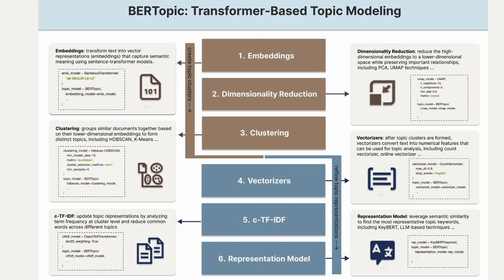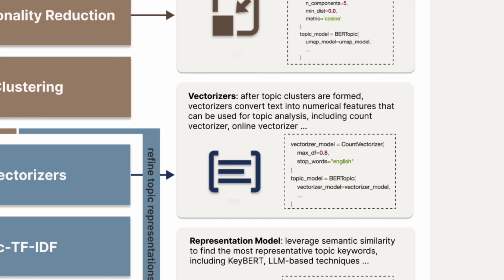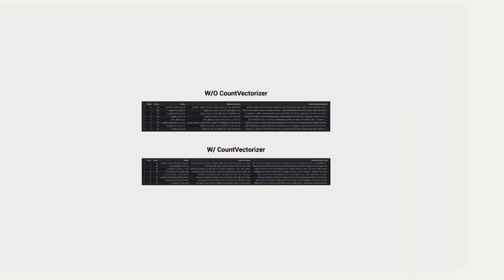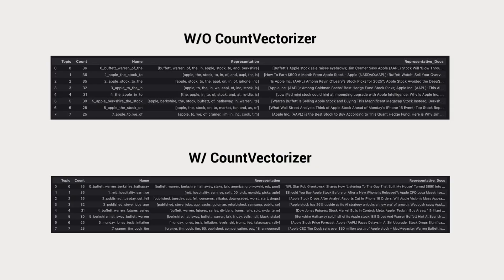Now that we've covered the modules that group documents into similar clusters, we'll focus on fine-tuning our topics by selecting more meaningful keywords. BERTTopic provides several vectorization options. Let's explore CountVectorizer and its key parameters: nGramRange, which lets us combine multiple words into topic phrases; StopWords, which removes common words that don't add meaning; and MinDF and MaxDF, which control how frequently a term needs to appear to be included in our vocabulary. Here we demonstrate the result of k-means with CountVectorizer and MaxDF set to 0.8, showing noticeable improvements and significantly reducing keywords like 'Stock' and 'Apple' that frequently appeared in all documents without adding extra value.